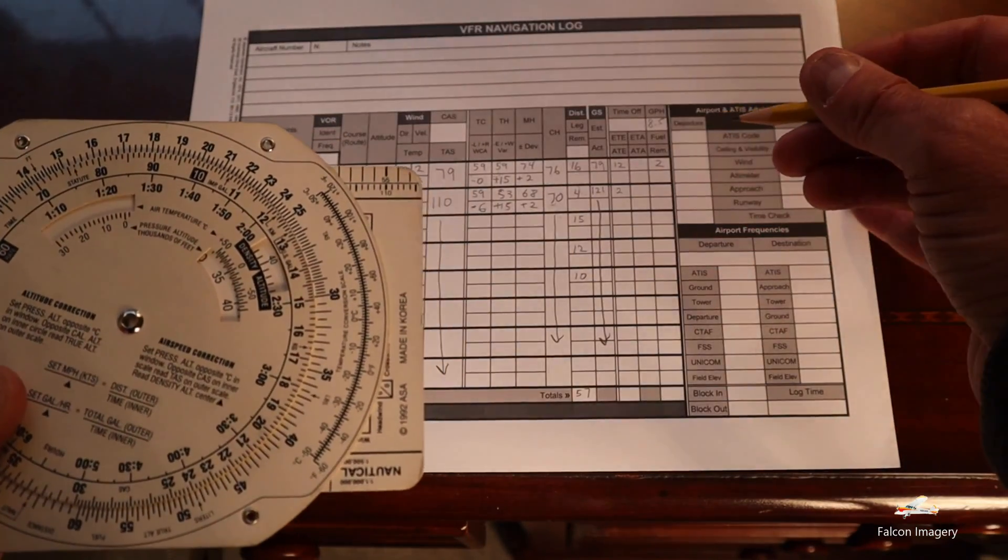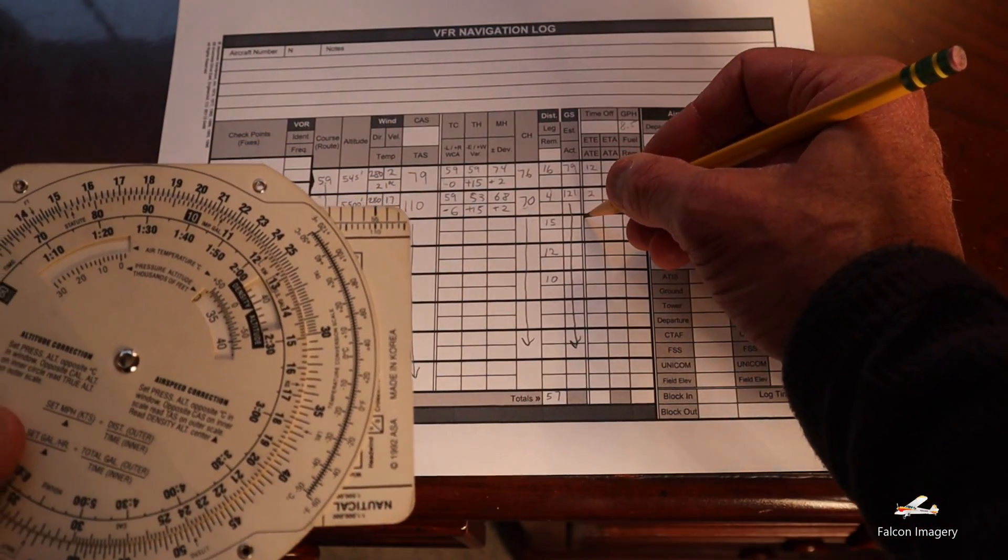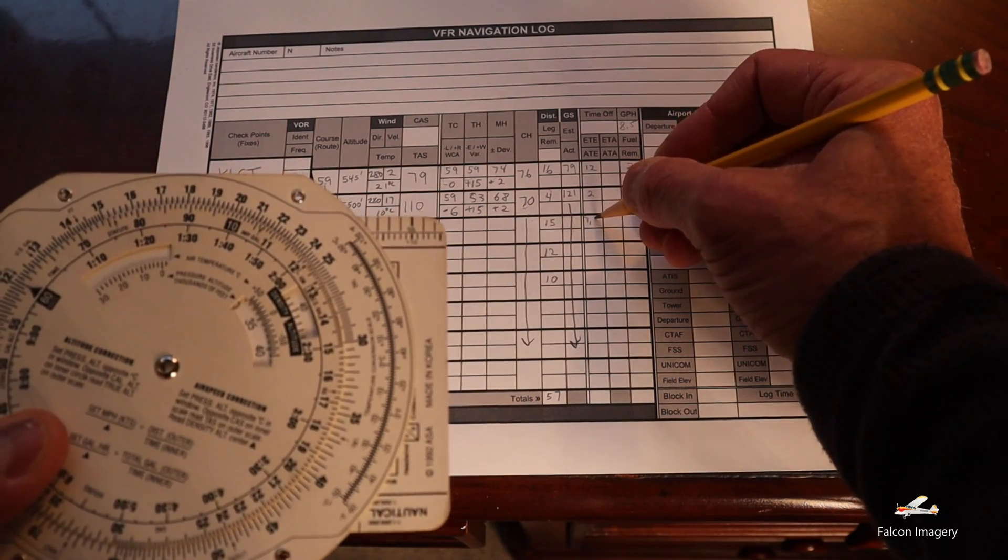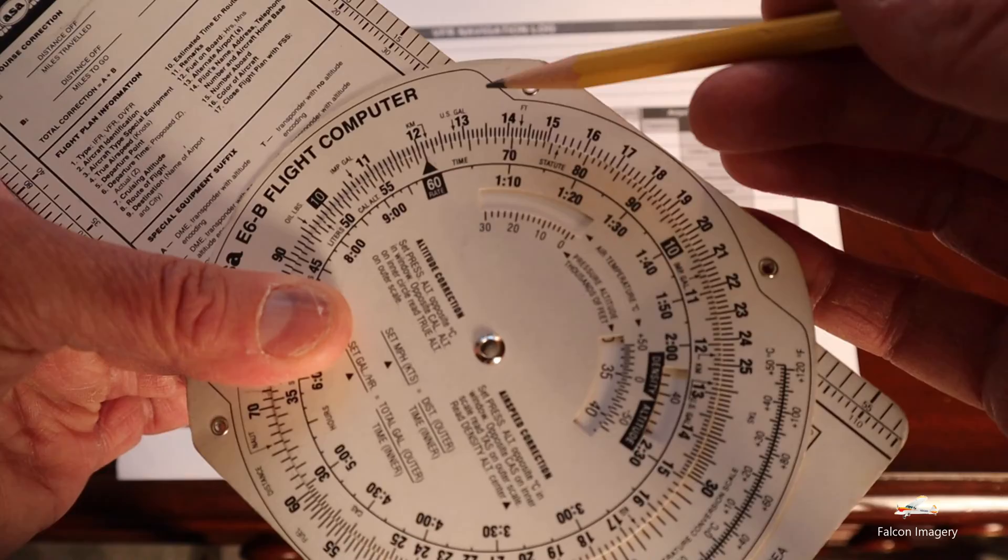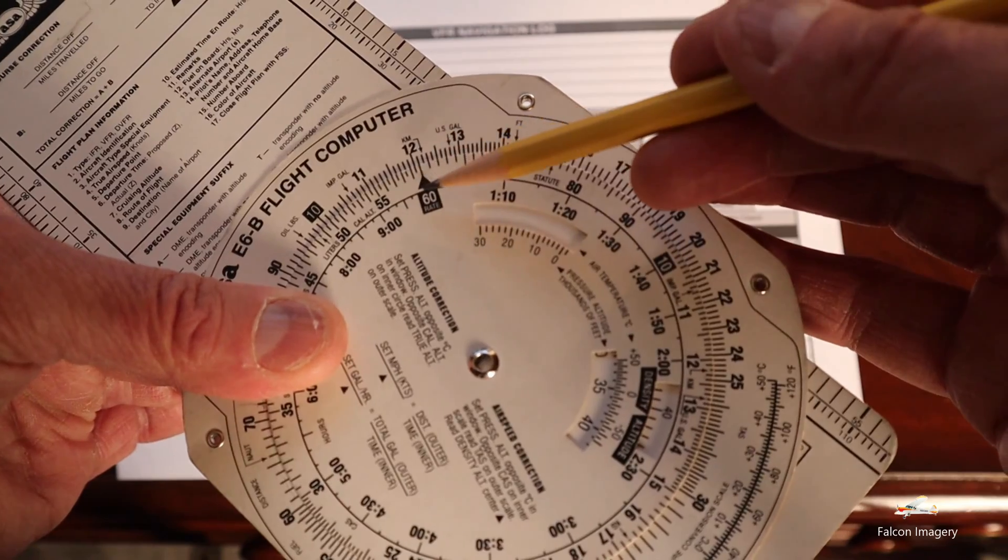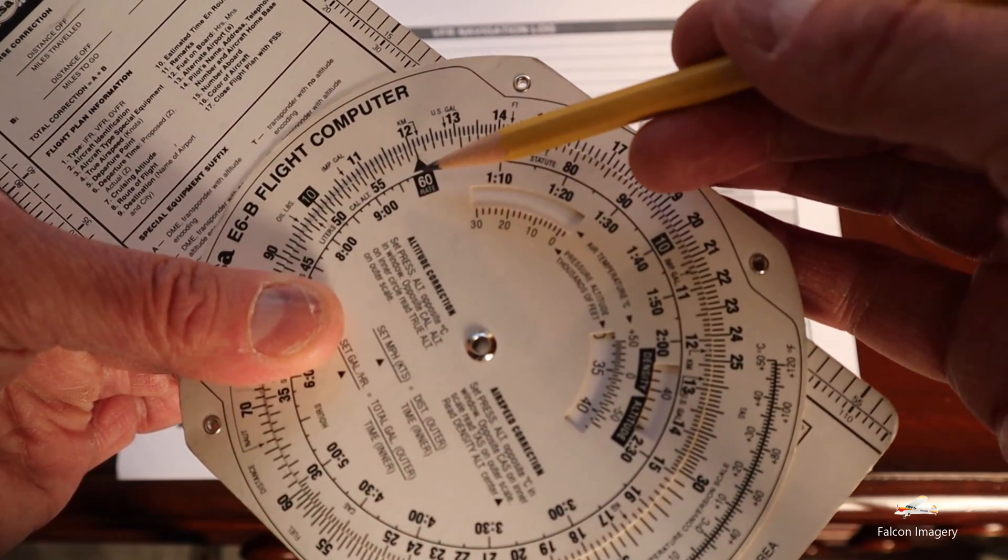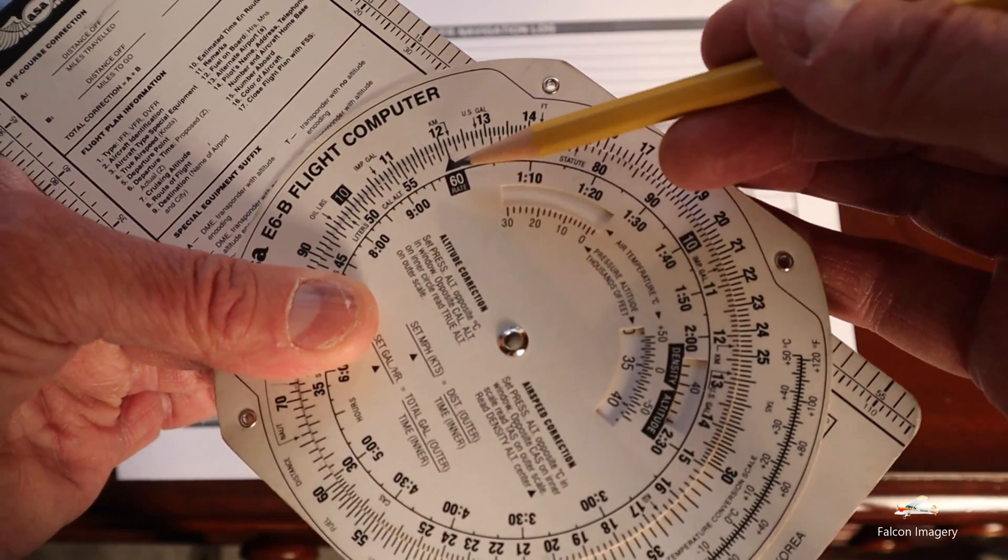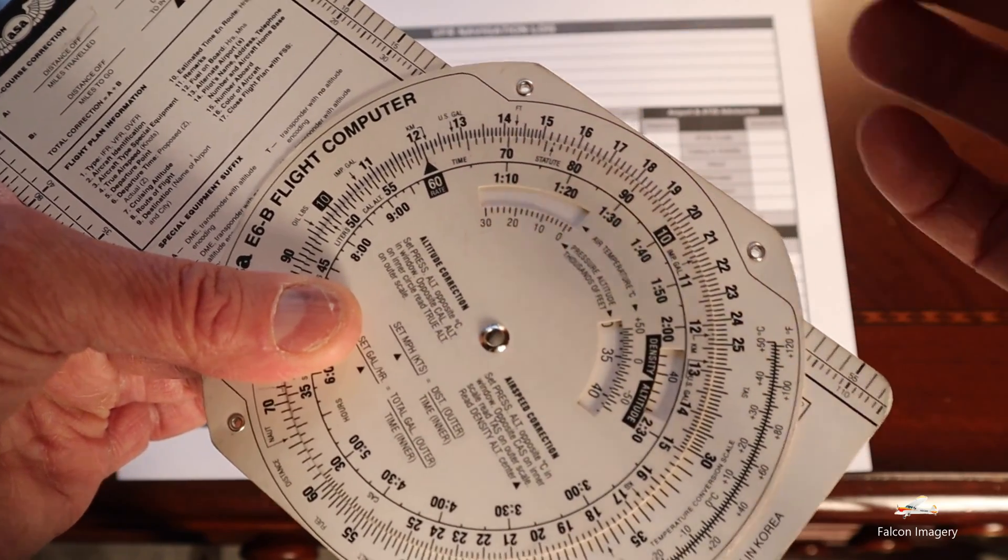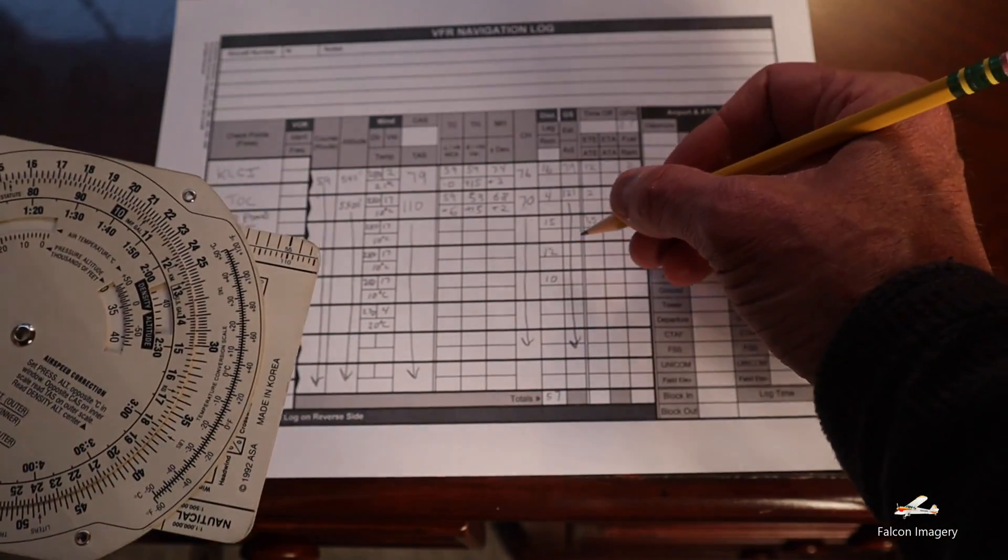Next we're going to look at the number 12 and see that it's showing 60 underneath it, and so we know it's going to take approximately 6 minutes to go the 12 miles. So put the 6 in here.